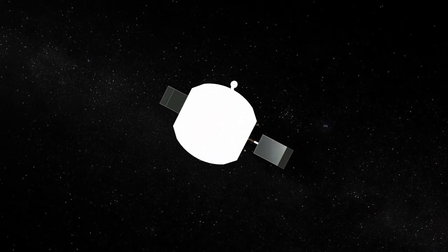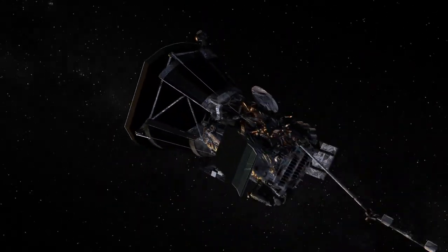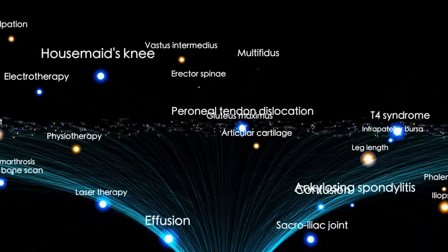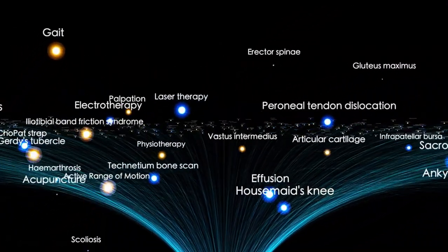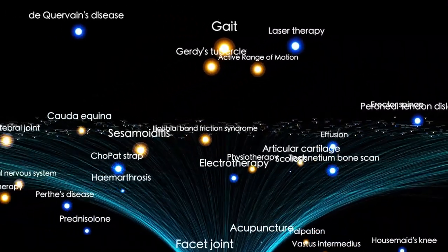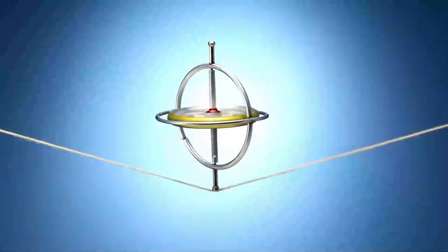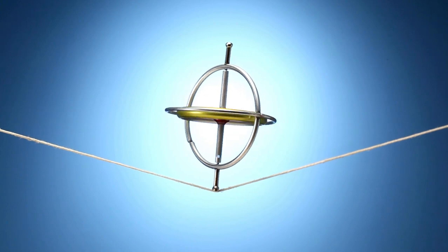One type of exoplanet that has captured the attention of astronomers is the gas giant. These planets are similar in composition to Jupiter and Saturn, but they are much larger. Some of these behemoths have been dubbed super-Jupiters, and they dwarf even the largest planet in our solar system. But that's not all. There are also hot Jupiters, which are gas giants that orbit extremely close to their host star. They exist in a fiery world with temperatures that could melt metal.